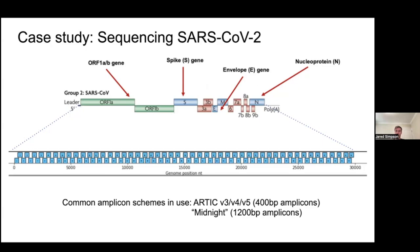The workflow is: take a clinical sample, convert the RNA to cDNA, amplify the two pools of amplicons, merge the pools together, make a sequencing library, and generate sequencing results. There were two common amplicon schemes: the ARCTIC scheme with 400 bp amplicons, and another from New Zealand — Nicki Freed's lab — nicknamed Midnight, which uses 1200 bp amplicons. There's a trade-off between sensitivity and amplicon size; shorter amplicons let you sequence lower-abundance samples, while longer amplicons are a bit easier to work with end-to-end.